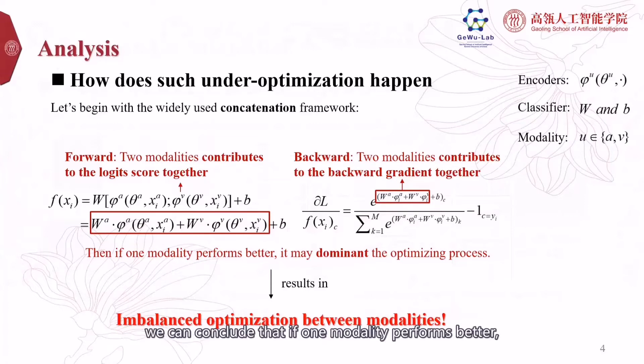Based on this, we can conclude that if one modality performs better, it may dominate the prediction results and the optimizing process, causing under-optimized representation of the weak modality. That is the imbalanced optimizing we talked about.